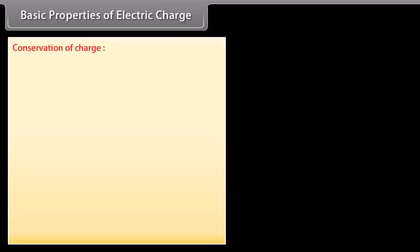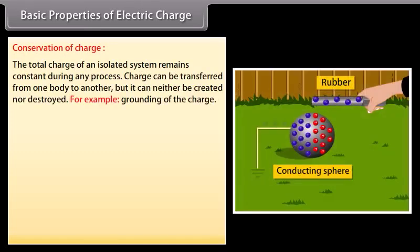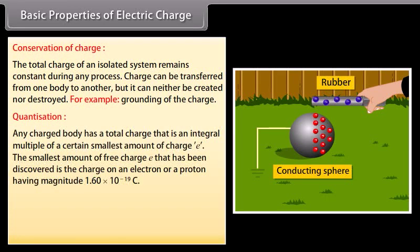Conservation of charge: The total charge of an isolated system remains constant during any process. Charge can be transferred from one body to another, but it can neither be created nor destroyed — for example, grounding of a charge. Quantization: Any charged body has a total charge that is an integral multiple of a certain smallest amount of charge e.